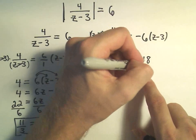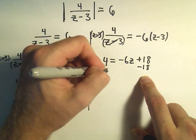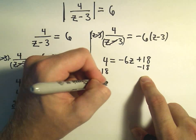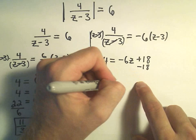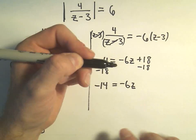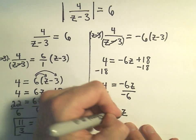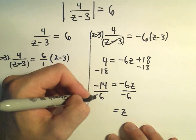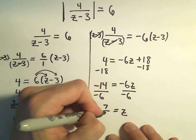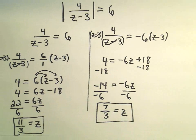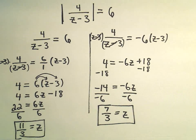I can subtract 18 from both sides. 4 minus 18 is negative 14, equals negative 6z. And I could simply divide both sides by negative 6. Negative 14 over negative 6 is going to be positive 7 over 3. And now I've got my second solution.